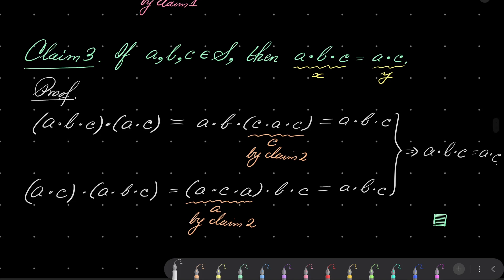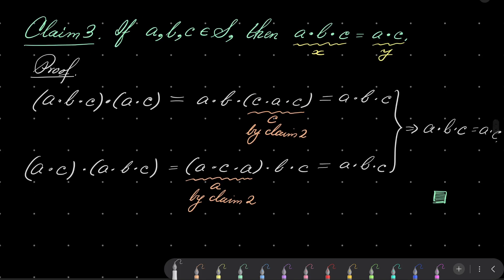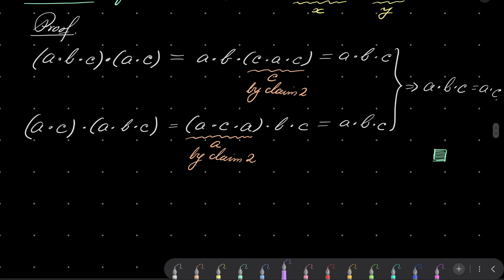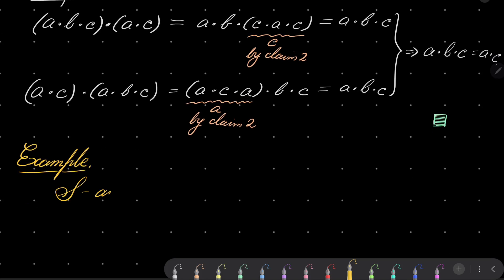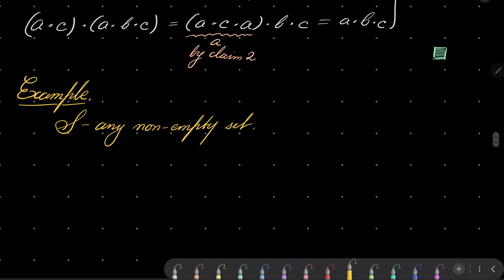And now let's give an example. Does any semigroup which satisfies our assumption exist? Well, example. Example of such semigroup: let S be any non-empty set. And I will define x·y as by definition just x. The second argument is completely ignored.